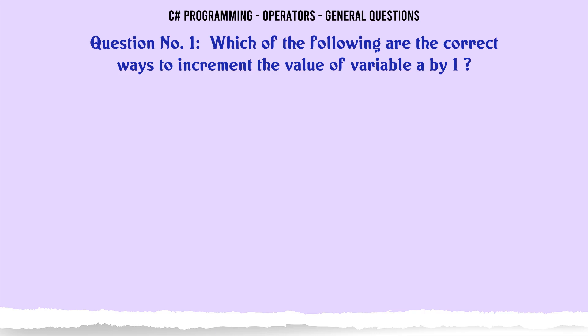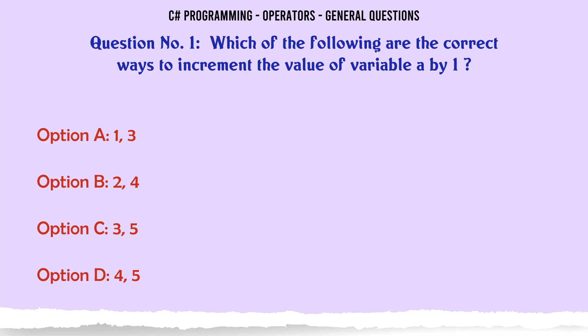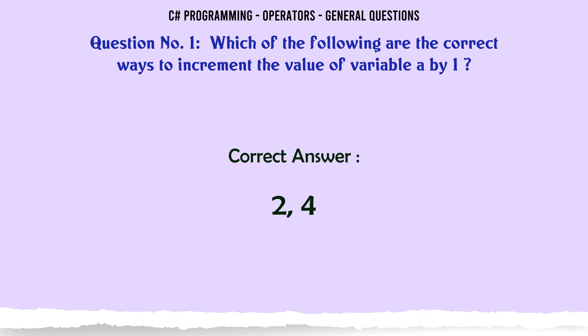Which of the following are the correct ways to increment the value of variable A by 1? A: 1, 3. B: 2, 4. C: 3, 5. D: 4, 5. The correct answer is 2, 4.